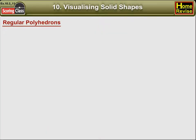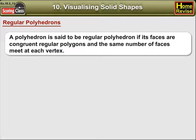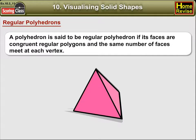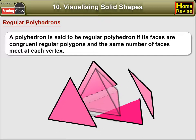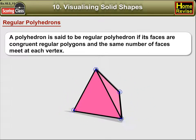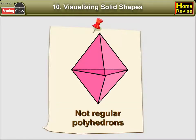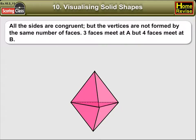Regular polyhedrons: a polyhedron is said to be a regular polyhedron if its faces are congruent regular polygons and the same number of faces meet at each vertex. This polyhedron is regular — its faces are congruent regular polygons and vertices are formed by the same number of faces. This polyhedron is not regular; all the sides are congruent, but its vertices are not formed by the same number of faces.